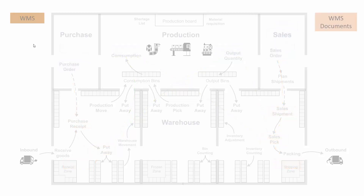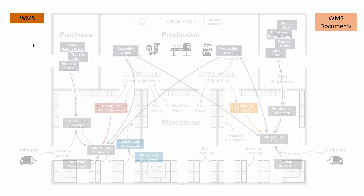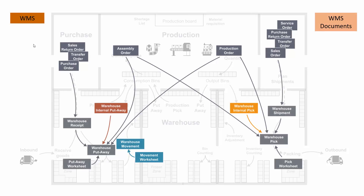Finally, on the WMS functionality, meaning if you set the directed put away and pick checkmark on the location card, you will have access to an internal warehouse pick and an internal warehouse put away, and you will be able to make warehouse movements from a movement worksheet. Those are documents that are applied only when you use directed put away and pick.